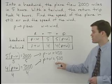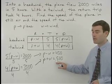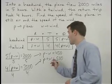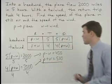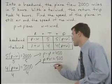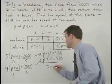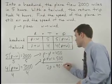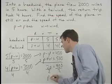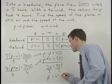Now our system of equations is set up in a familiar way and we can use addition to solve it. Notice that when we add the two equations together, the w's cancel and we have 2p equals 900. Divide both sides by 2 and p equals 450.